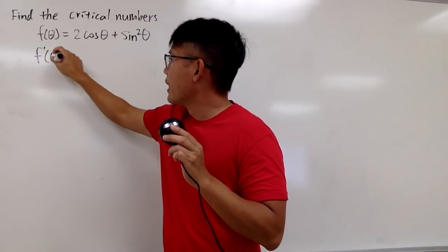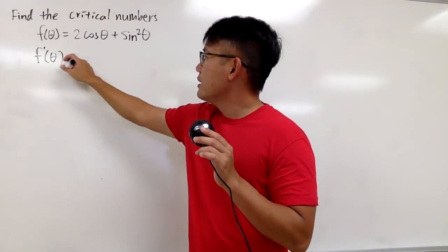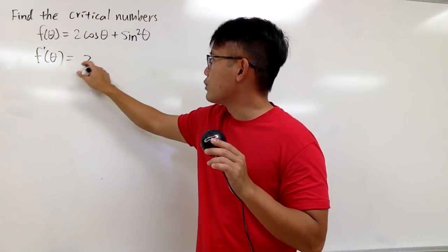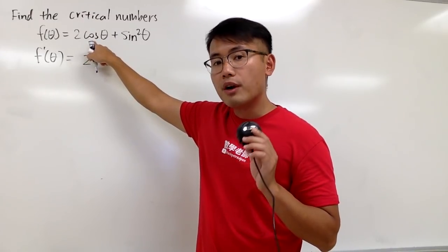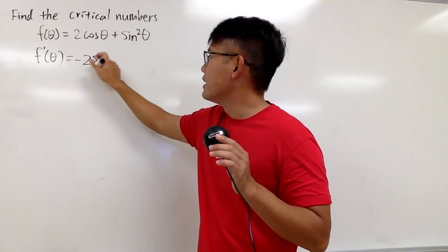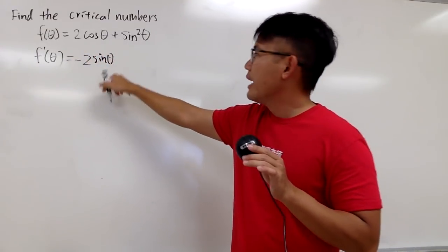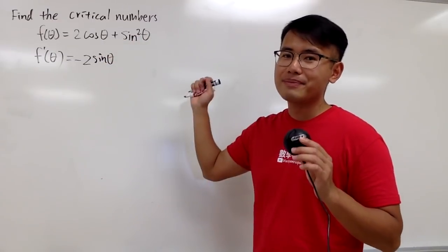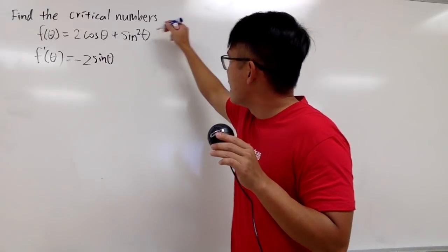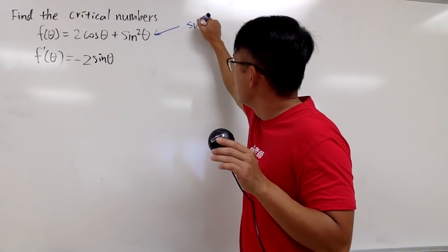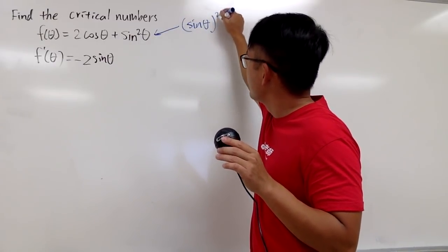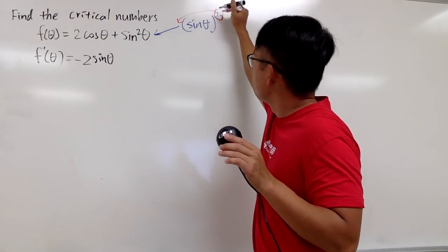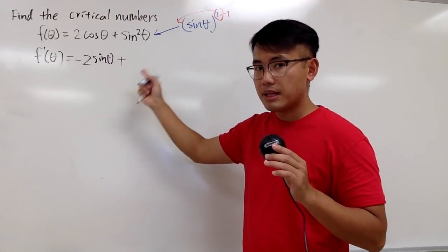Let me just write down f' of θ. The derivative of 2cosθ, since 2 is just a constant multiple, let's write that down. The derivative of cosθ is negative sinθ, like this. And then we'll just be adding with the derivative of sin²θ. And if you would like, you can look at sin²θ as sinθ to the second power. Because we will have to bring the power to the front, minus 1 to the power, and we get plus.